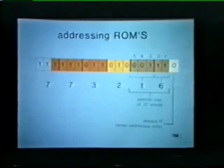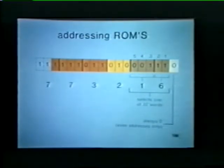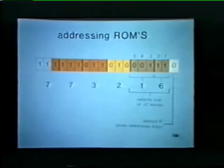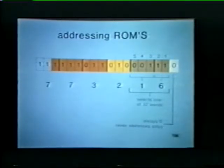Bits 1 through 5 allow us to address a specific word within the 32-word ROM unit. Note that in a ROM we address words only — we cannot address bytes. All word addresses are even-numbered; consequently the least significant ROM address bit, bit 0, is always a binary zero. Several pre-programmed ROMs are available.